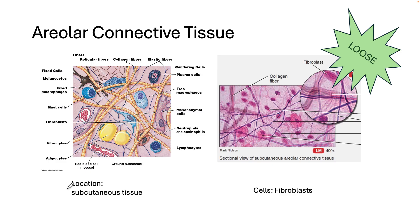We'll start with loose connective tissue. Areolar connective tissue is a kind of generic tissue — it's considered loose because there's quite a bit of space between the cells. You find this tissue around organs or under your skin, and its function is to bind and hold structures together. It has some collagenous fibers for strength and some elastic fibers for support. The cells in areolar connective tissue are called fibroblasts.